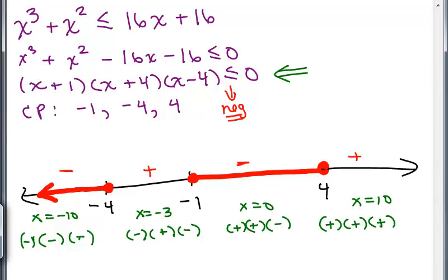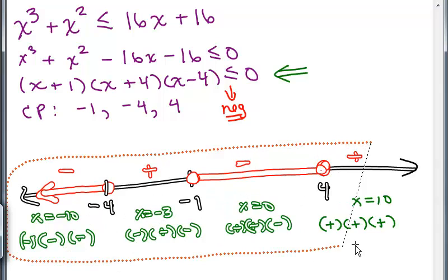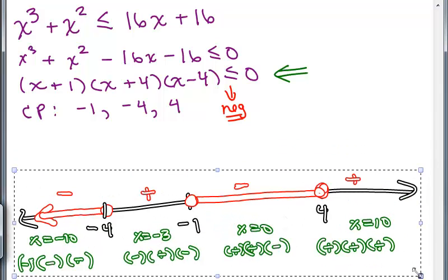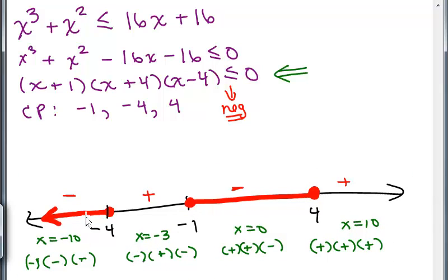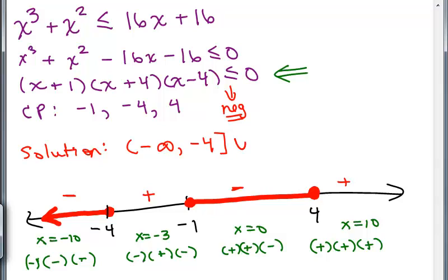Now how do we write that in interval notation? Here's our solution in graphical form — now we write it using interval notation. It goes from negative infinity up to negative 4, including negative 4, so we use a bracket. Union that with the interval from negative 1 to 4, including both endpoints. So the solution is negative infinity to negative 4, union negative 1 to 4.